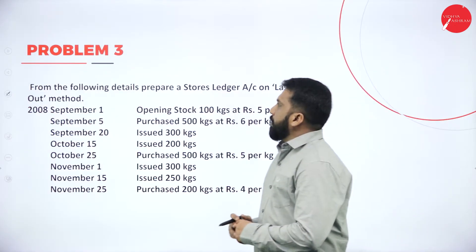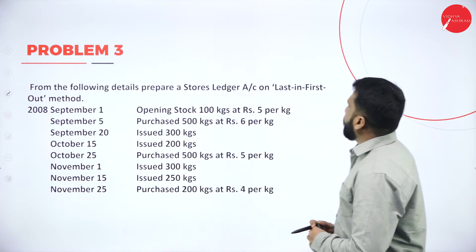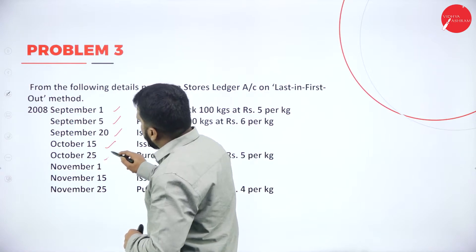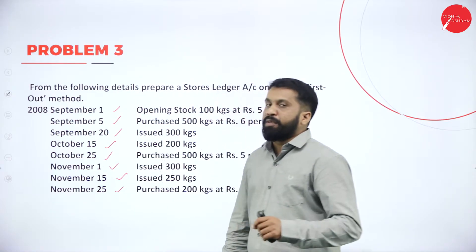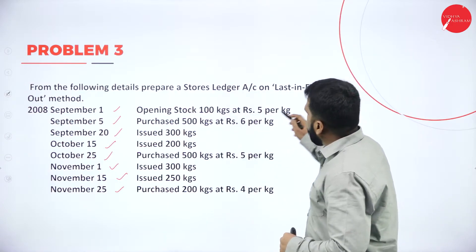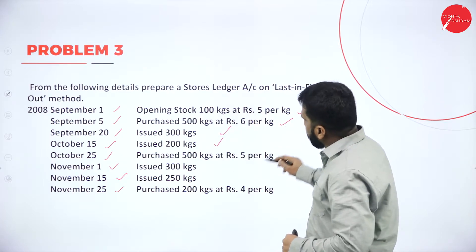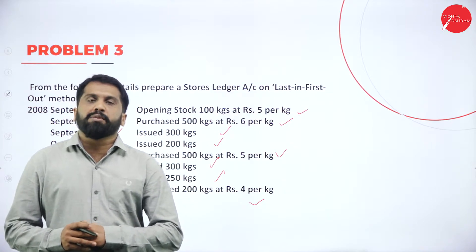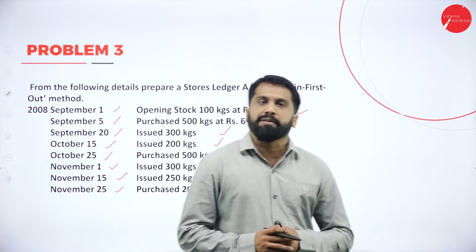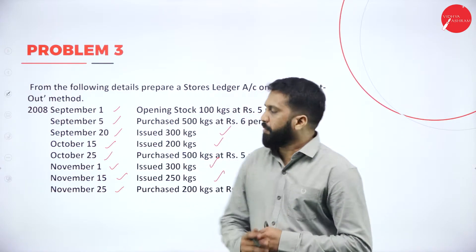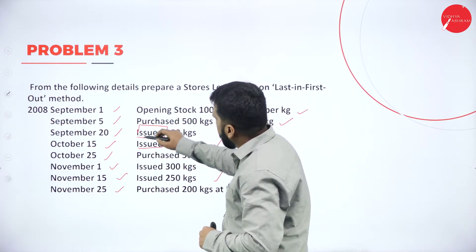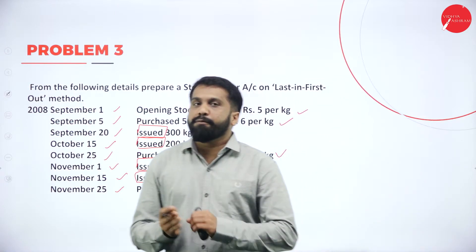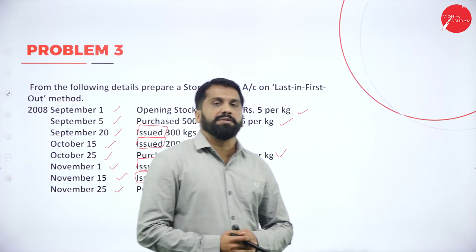This is problem number 3: From the following details, prepare a store ledger account on the last in, first out method. The dates are September 1st, 5th, 20th, October 15th, 25th, November 1st, 15th, and 25th — covering opening stock, purchases, and issues. Whatever you do for FIFO, same thing we will do for LIFO. The LIFO effect applies only in case of issue. In case of opening stock and purchases, FIFO or LIFO, it doesn't matter — the same procedure we follow.